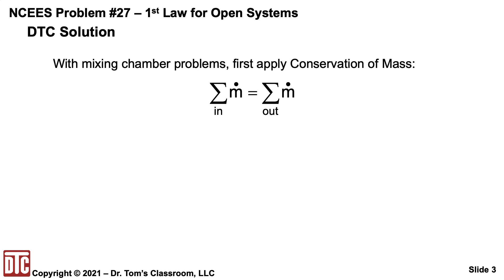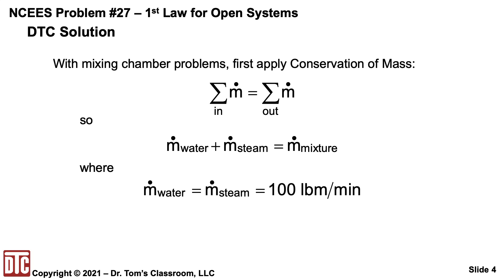With mixing chambers, I apply conservation of mass. The sum of the m-dots in equals the sum of the m-dots out. Therefore, m-dot water plus m-dot steam equals m-dot mixture, where you're given that m-dot water and m-dot steam are each equal to 100 pound-mass per minute.